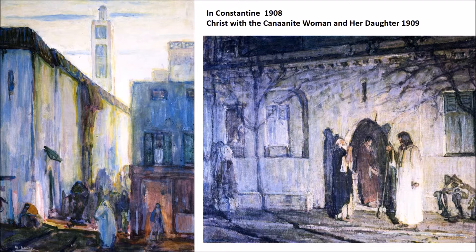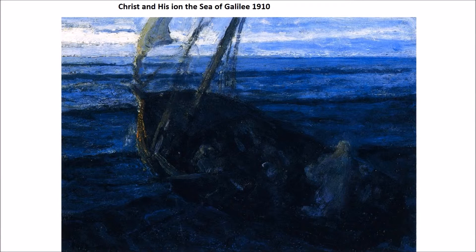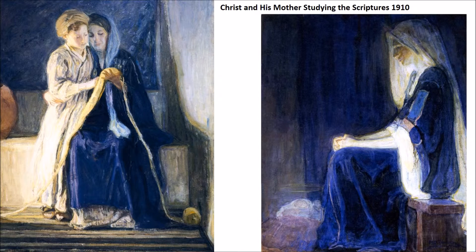Christ with the Canaanite Woman and Her Daughter — it's interesting how little space is actually occupied by the people and how much of the background is seen. In this image, you can actually see the thickness of the paint on the surface, almost an expressionistic quality he's manufacturing. This is something often lost with Tanner paintings — there is a built-up surface of texture, and as we approach the end of his career, this texture really becomes a phenomenal part of the work.